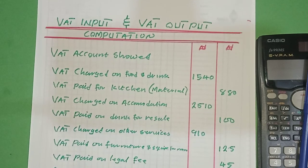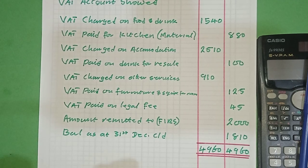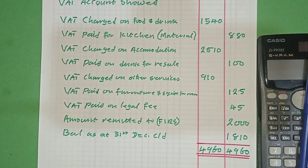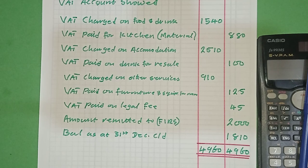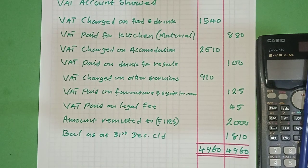We are told to compute the amount of VAT that is due to the Federal Inland Revenue Service, the tax authority. We will check the two aspects - input VAT and output VAT. Input VAT is when you purchase with the VAT element; the tax authority is owing you. Output VAT is when you sell with the VAT element; you owe the tax authority. The difference between the two will determine who owes whom.